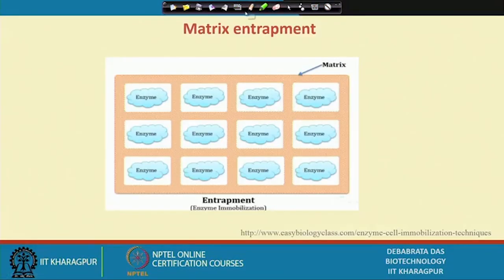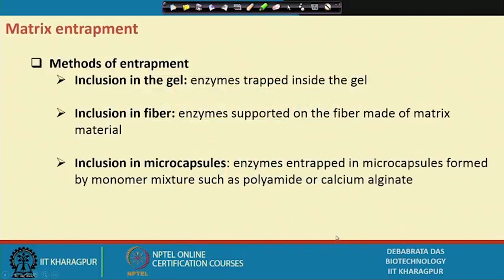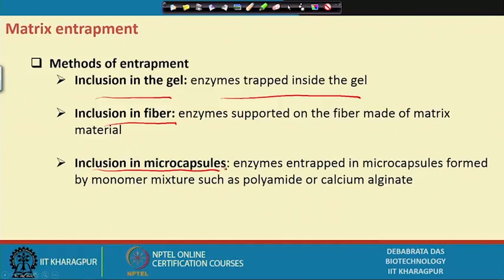This is an example of matrix entrapment — you can clearly see the matrix and how enzymes are entrapped inside it. The methods of entrapment include infusion in the gel, inclusion in the fibre, and inclusion in the microcapsule.